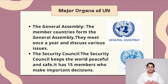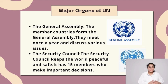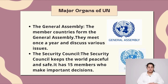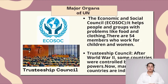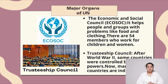The Security Council keeps the world peaceful and safe. It has 15 members who make important decisions. The Economic and Social Council helps people and groups with problems like food and clothing. It has 54 members who work for children and women.